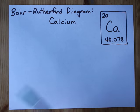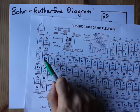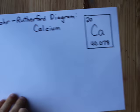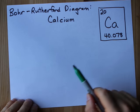Alright, Bohr Rutherford Diagram for calcium. Calcium on my periodic table here is the 20th element, and it has an average atomic mass of about 40.